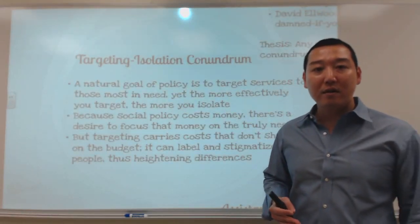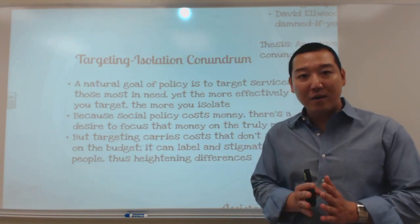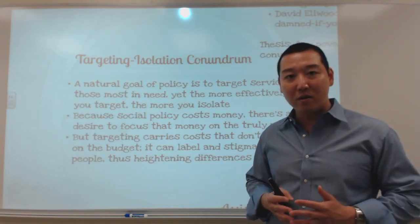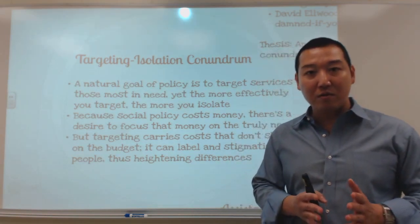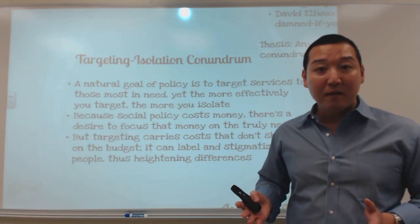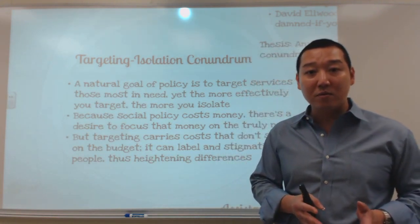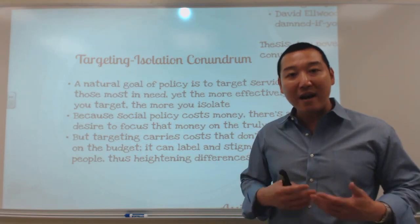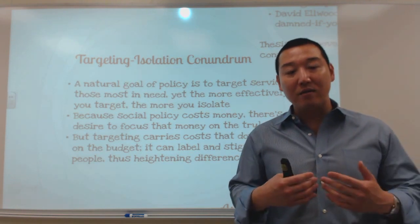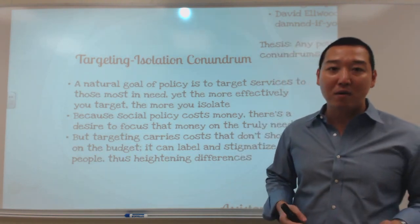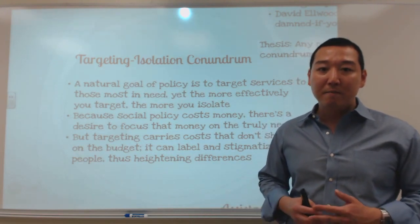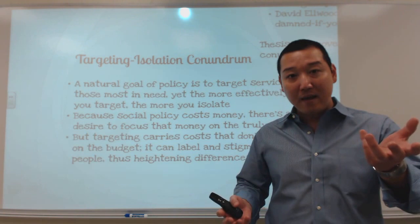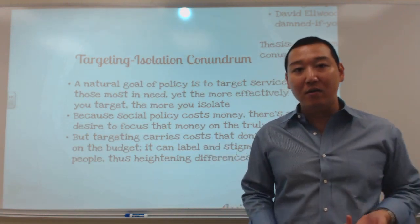Finally, there is the targeting-isolation conundrum. Governments trying to address poverty often have limited resources and want to channel them to those most in need. But the side effect — whether intended or not — is that by differentiating between those who receive benefits and those who don't, you end up isolating and stigmatizing the poor. The irony is that the more effectively we target our government resources, the more we end up isolating or stigmatizing the poor.